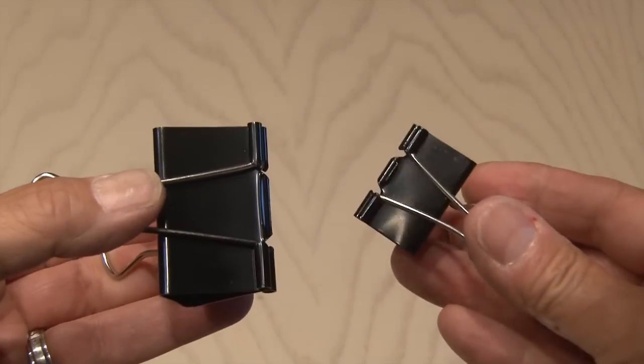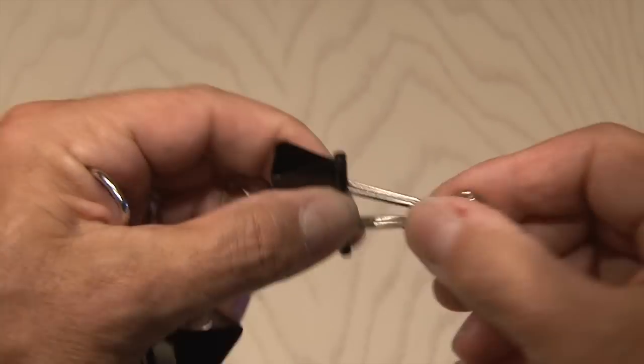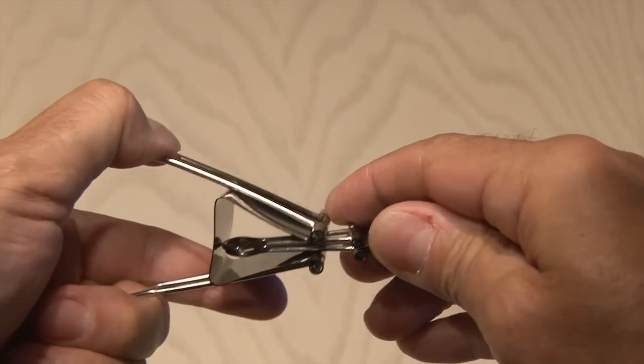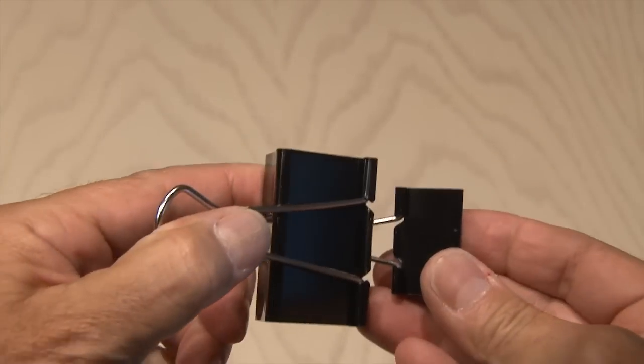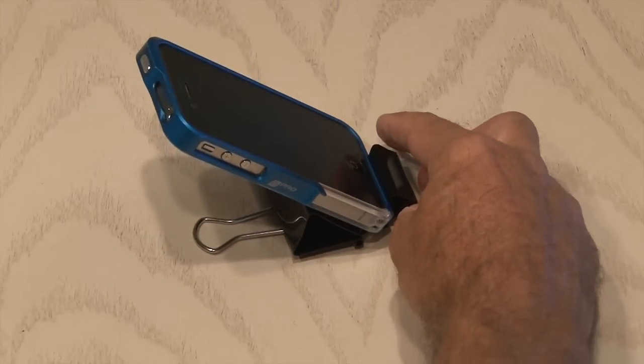A large binder clip and a smaller one make a pretty cool cell phone stand. Take the smaller one, close the clasps, and grip it with the big one. And bend the one smaller clip up, lay it on your table, and now you've got a cheap and easy cell phone stand.